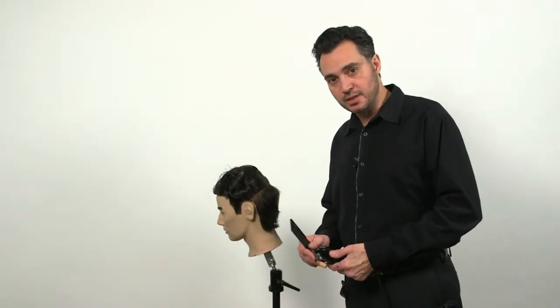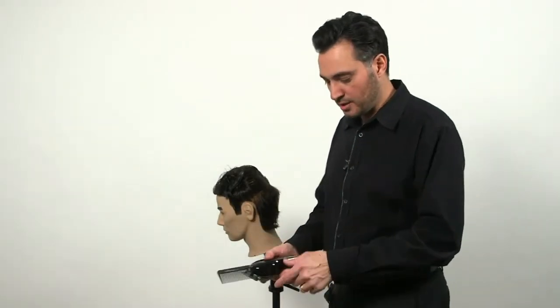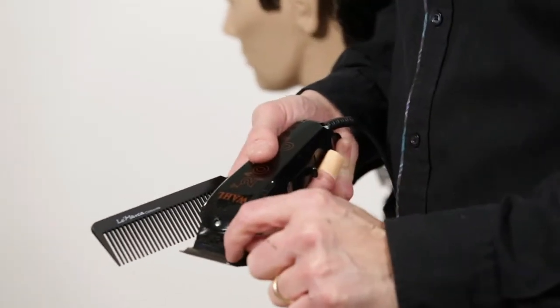Okay, now we're doing the clipper over comb technique. We're going to make sure that the lever is all the way down, as to make the blade open.